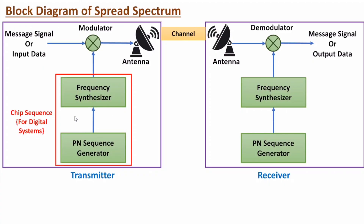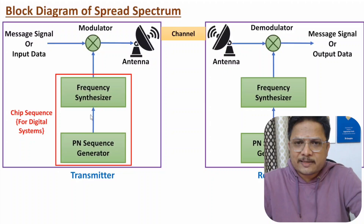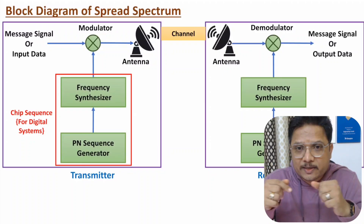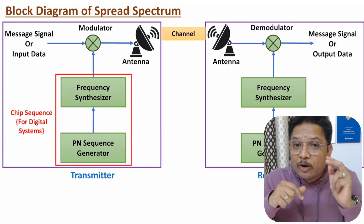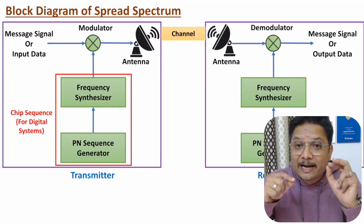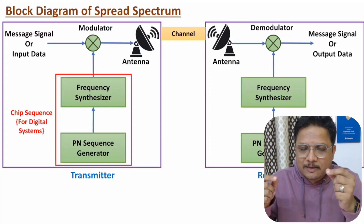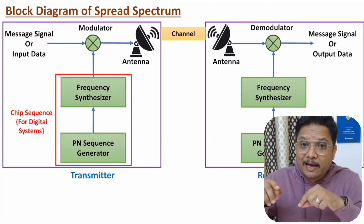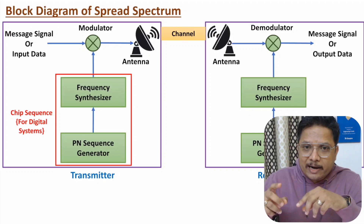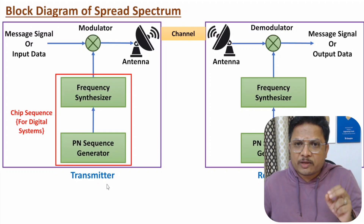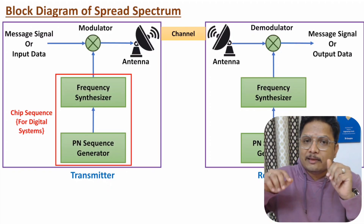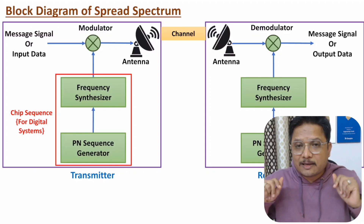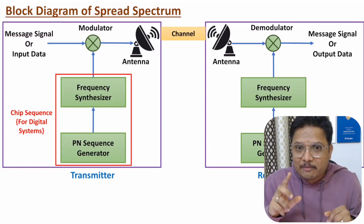This is about the analog system; in a digital system those two blocks are replaced by a chip sequence. A common interview question is: what is a PN sequence? PN sequence is a Pseudo Random Noise sequence. Although the name suggests it is random, a PN sequence only appears like a random sequence — it is actually periodic and can be identified based on the code. Both the transmitter and receiver know the code, and based on that they communicate using what appears to be a random sequence.